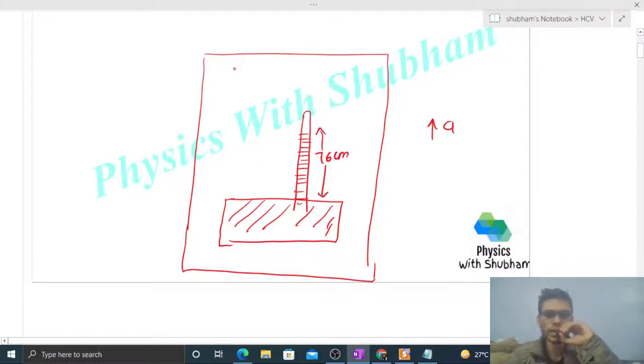The pressure inside this elevator, let's assume p naught, is the value we need to check. Inside the barometer there is vacuum.